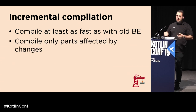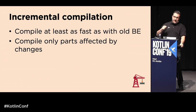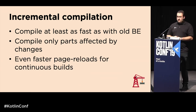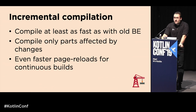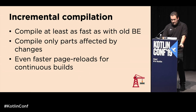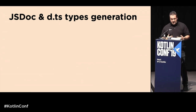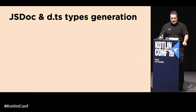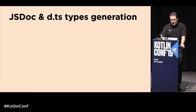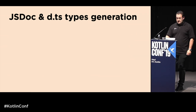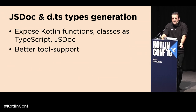Incremental compilation allows compiling only the parts affected by changes, which means continuous-build page reloads will also be much faster — making it even more fun to iterate on small projects. The new backend also enables easily exposing exported Kotlin signatures as TypeScript headers and JSDoc, which is the counterpart to what Dukat does. This makes it easier to use Kotlin libraries from JavaScript and allows static analyzers to reason about your code conveniently.